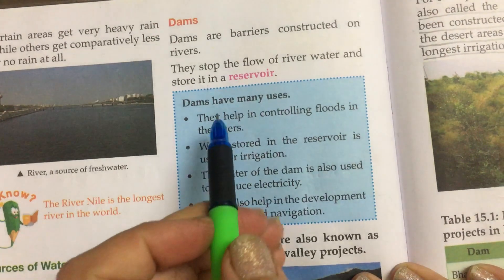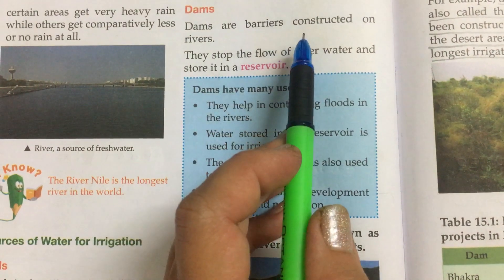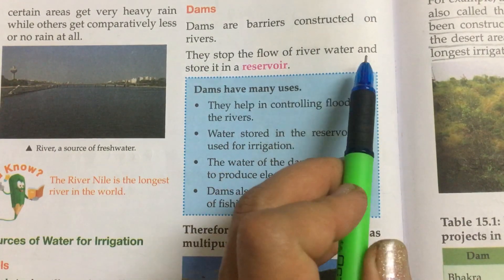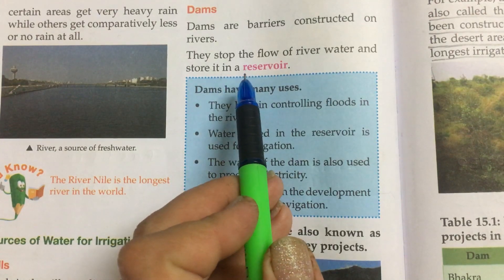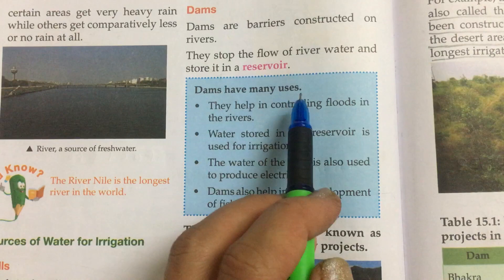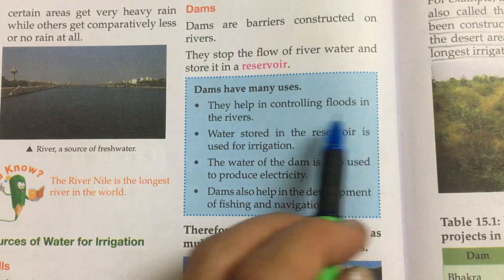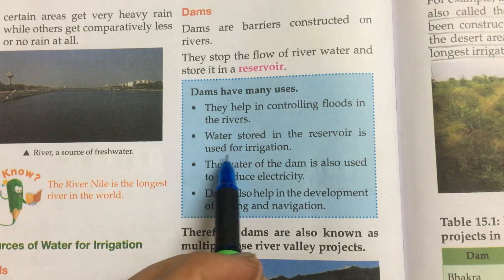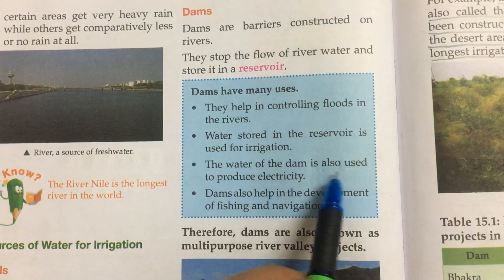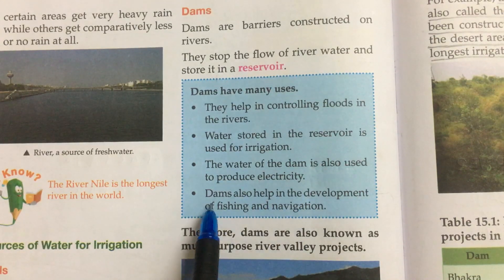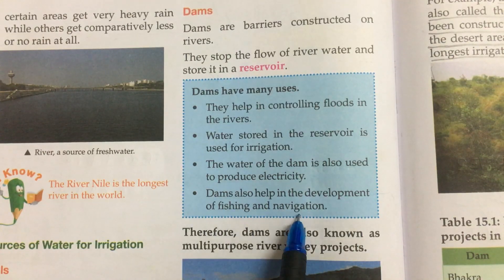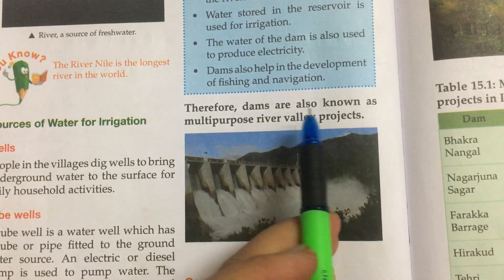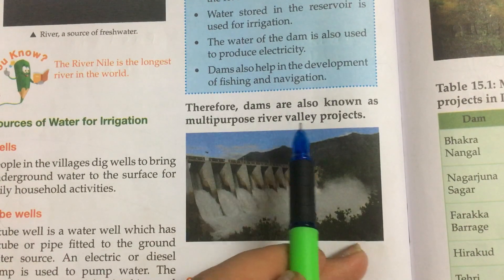Dams are barriers constructed on rivers. They stop the flow of river water and store it in a reservoir. Dams have many uses: they help in controlling floods in the rivers, water stored in the reservoir is used for irrigation, the water of the dam is also used to produce electricity, and dams also help in the development of fishing and navigation.